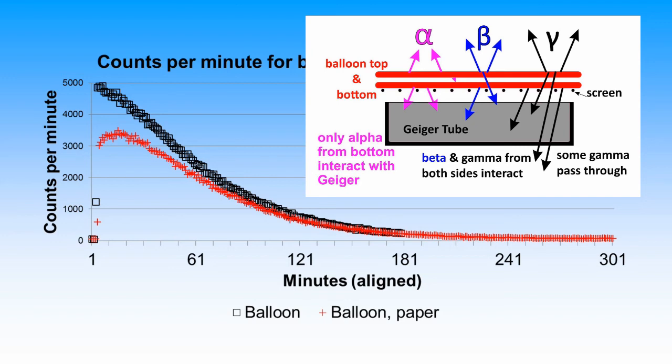This illustration shows the collapsed balloon atop the Geiger. Alpha particles emitted from the top side of the balloon cannot penetrate the balloon walls into the Geiger. Beta-gamma radiation from both sides of the balloon can reach the Geiger.